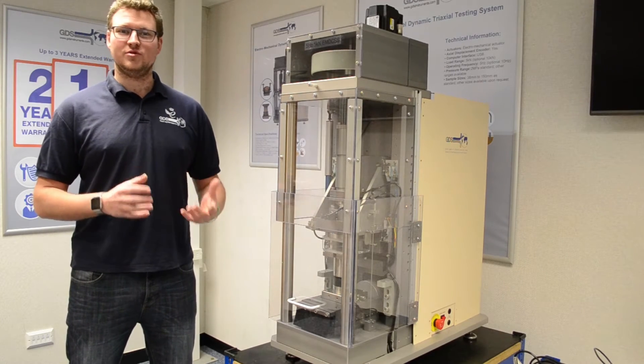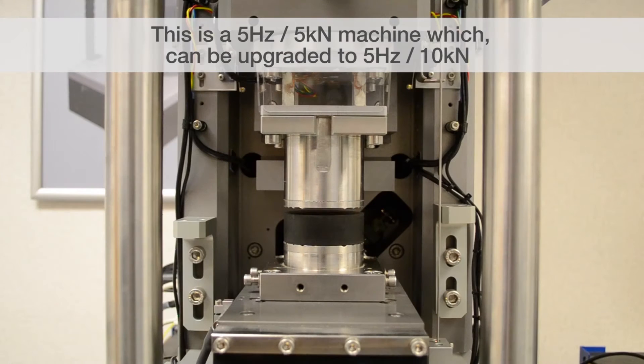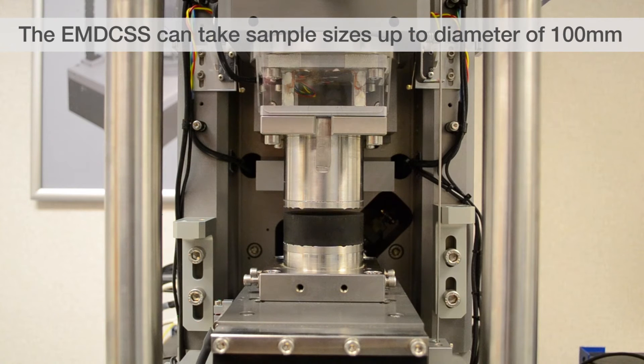The machine we're demonstrating today is a 5Hz, 5kN version. GDS also offers the upgrade potential to 5Hz and 10kN. The EMDCSS is able to take sample sizes up to a diameter of 100mm.